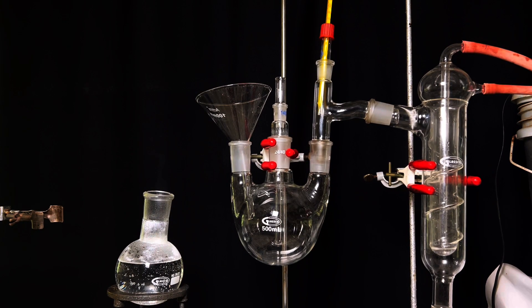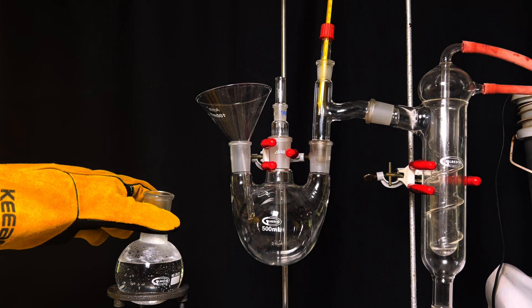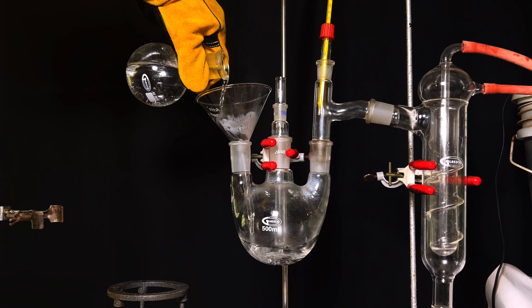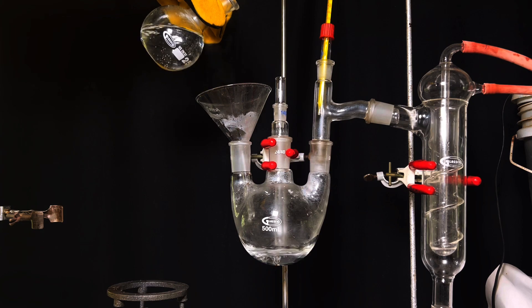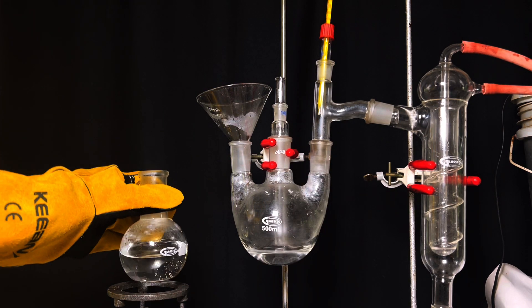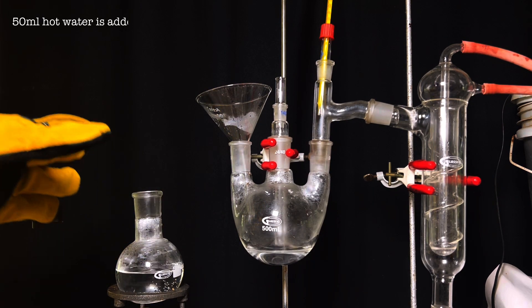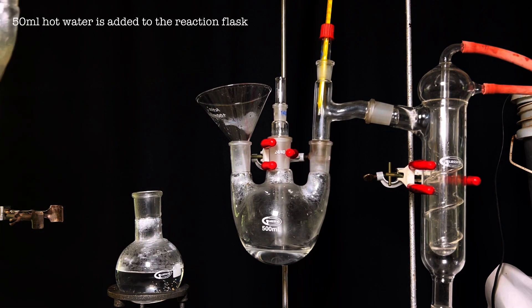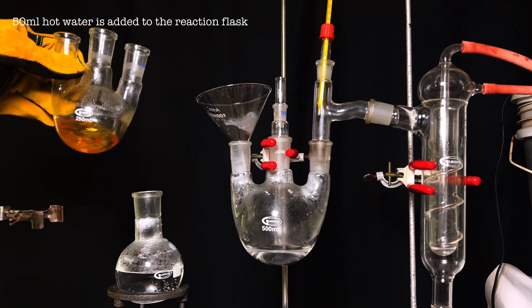Next, we will need a steam distillation system. All the glassware and connections you will see here are part of the steam distillation system. In the center, we have a 500 ml three-neck round bottom flask and this will be our reaction flask. Approximately 50 ml of hot water was initially poured into the reaction flask.